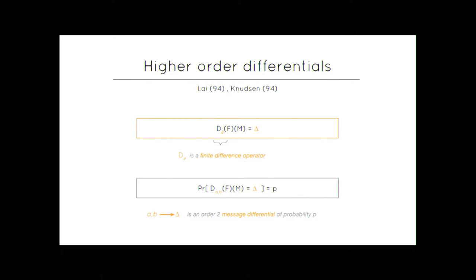Then you will ask that the probability that the equation da-b of fm is equal to a specific delta is fulfilled with a certain probability. You will say that a-b delta is an order 2 message differential of probability p. And we will use that to mount attacks with higher order differentials.